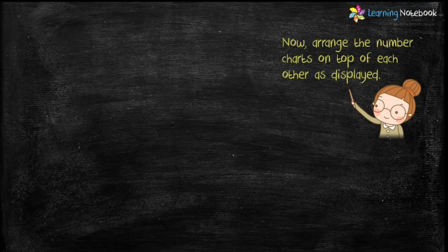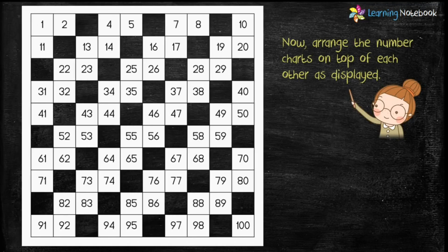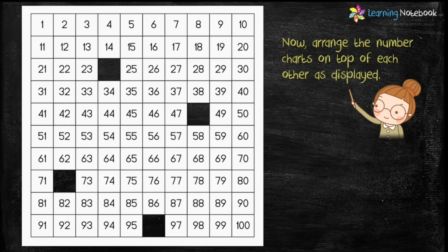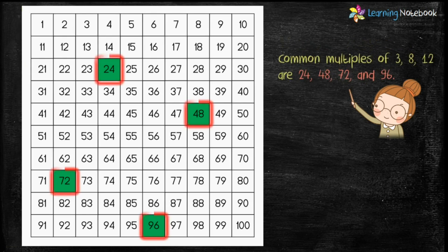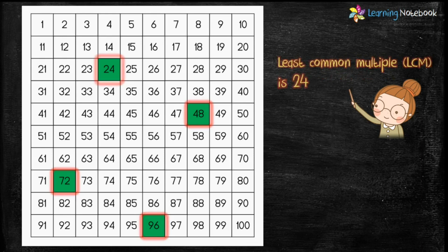Now students, arrange the number charts on top of each other as displayed. First place the number chart from which we had cut multiples of 3, then the one from which we cut multiples of 8, then the one from which we cut multiples of 12, and place the green colored number chart at the bottom. You can now see four common multiples in green, which are 24, 48, 72, and 96. Out of these, the Least Common Multiple is 24. Therefore, the LCM of 3, 8, and 12 is 24.